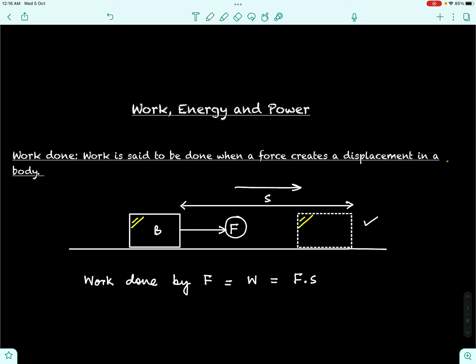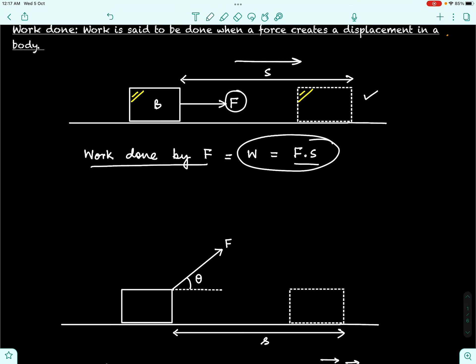Mathematically, the work done by force F will simply be the product of the force with the displacement: F times s. This is a very specific case where the force and displacement are in the same direction, and it is only in that case that we can write work equal to simply the product of the force and the displacement — their magnitudes.